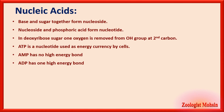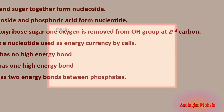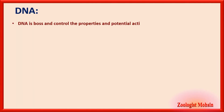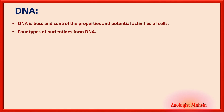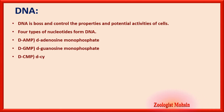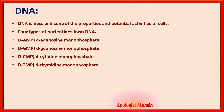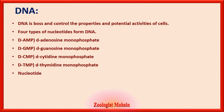ATP is a nucleotide used as the energy currency by cells. AMP (adenosine monophosphate) has no high-energy bond; diphosphate has one high-energy bond; triphosphate has two high-energy bonds between phosphates. DNA controls the properties and potential activities of cells. The four nucleotides forming DNA are: deoxyadenosine monophosphate (dAMP), deoxyguanosine monophosphate (dGMP), deoxycytidine monophosphate (dCMP), and deoxythymidine monophosphate (dTMP).